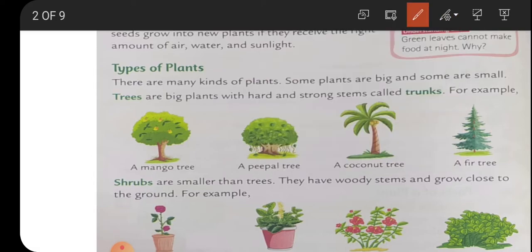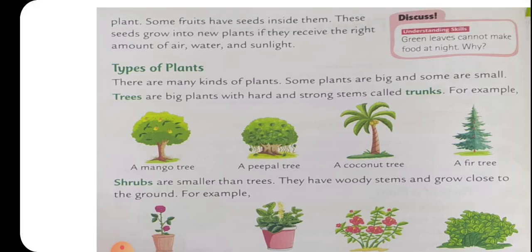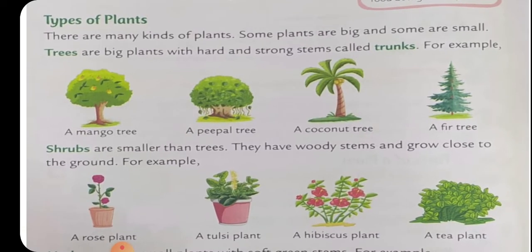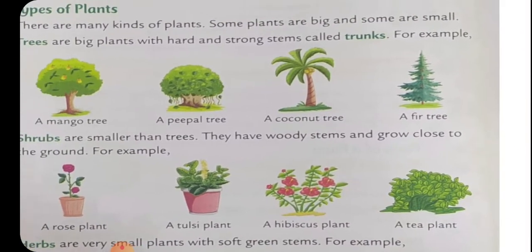Seeds get dropped on the soil and when they get a suitable temperature along with air, water, and sunlight, a new sapling comes out and it grows into a new plant. So the seeds inside the fruit grow into new plants. Now we'll talk about the types of plants.